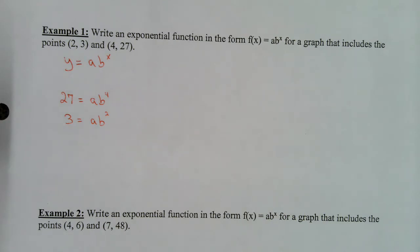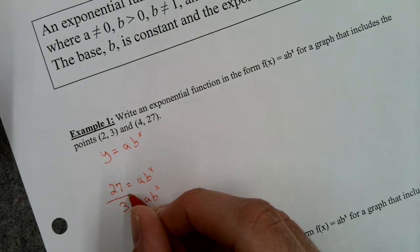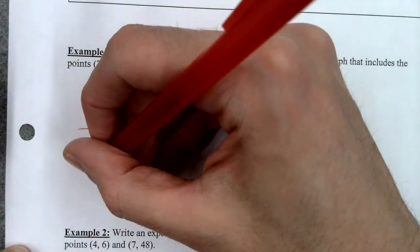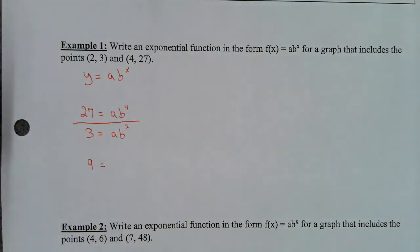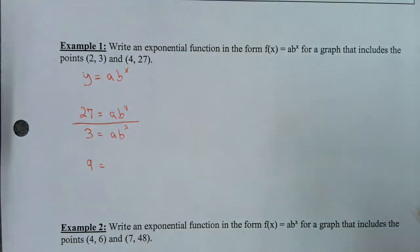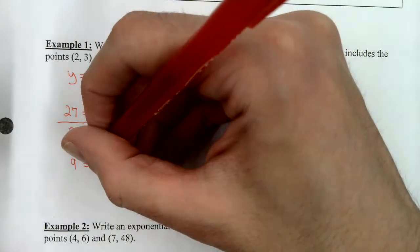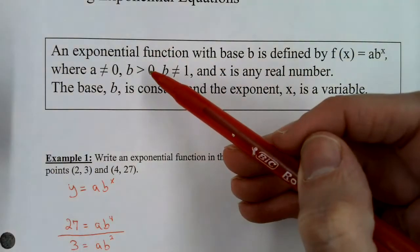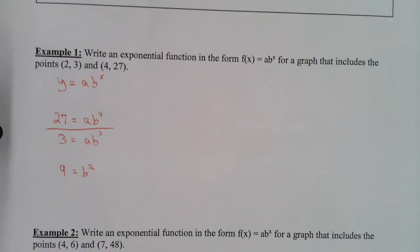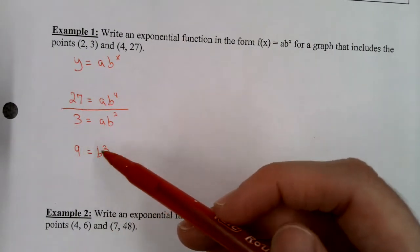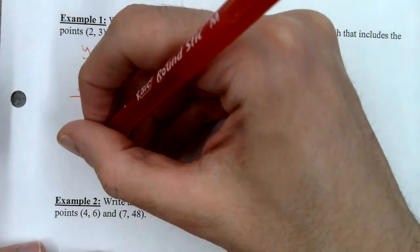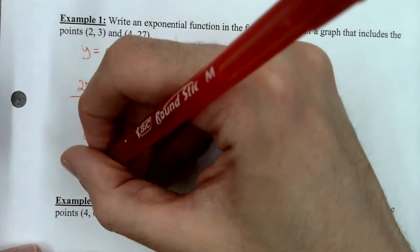Now I'm going to divide the two equations. 27 divided by 3 gives me 9. The a's divide out. b to the 4th power divided by b squared gives you b squared, because you subtract the exponents. Now remember, b has to be greater than 0, so b cannot be negative. You take the square root of each side — normally you'd take positive and negative, but we only want positive. So b equals 3.